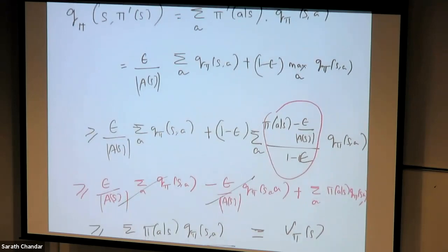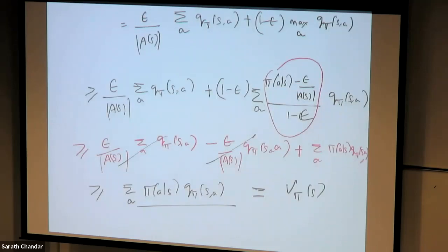We have just proved that if you take an epsilon-greedy action with respect to the current q-values, that is guaranteed to improve over the previous policy. By the policy improvement theorem, pi-dash is always greater than or equal to pi.